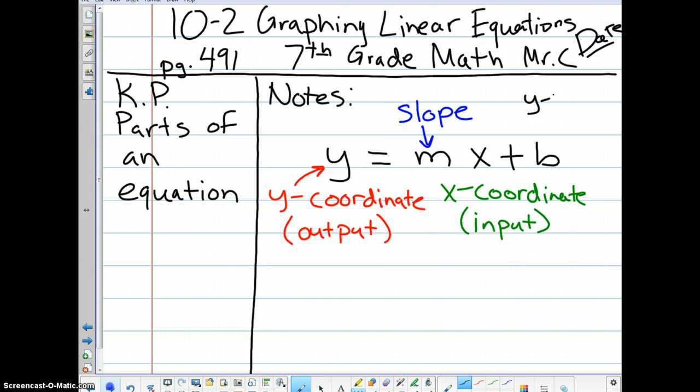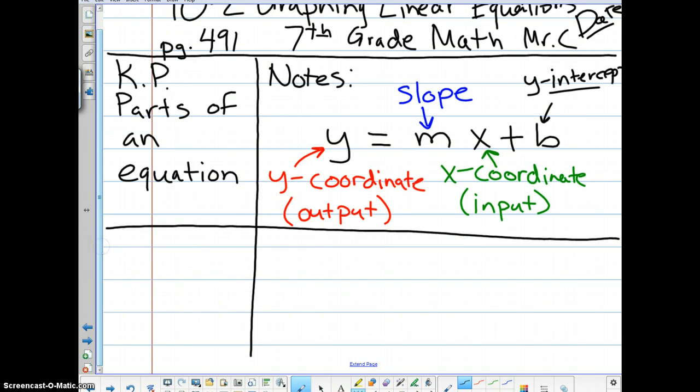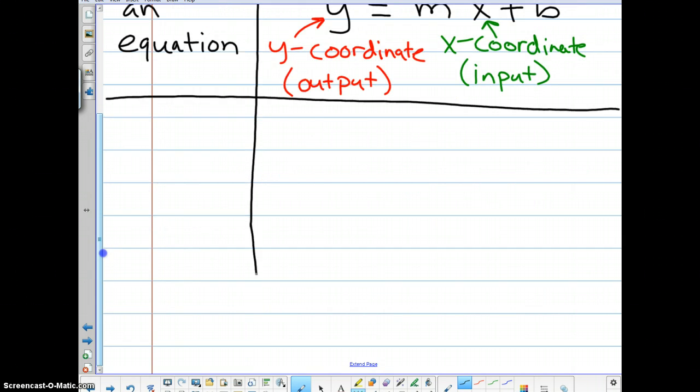And obviously we have the X coordinate here. If the Y coordinate is the output, the X coordinate must be the input. And then finally, with B, this is going to be what we call our Y intercept. Okay, Y intercept, which Y intercept means where our line is going to cross the Y axis. Okay, X coordinate input, slope is M, Y is obviously the Y coordinate. Once you're done with that, I want you to just draw a line across the paper onto our next key point.